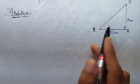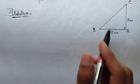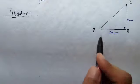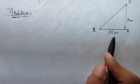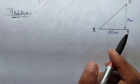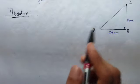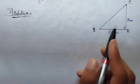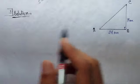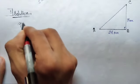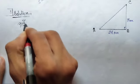We will note the following steps. In triangle ABC, AB is 24 cm and BC is 7 cm. So now let's look at Pythagoras.